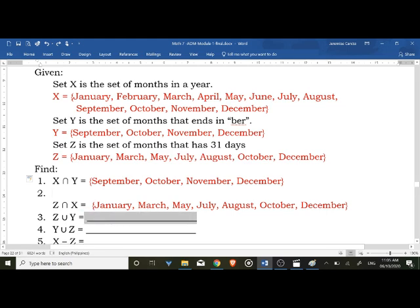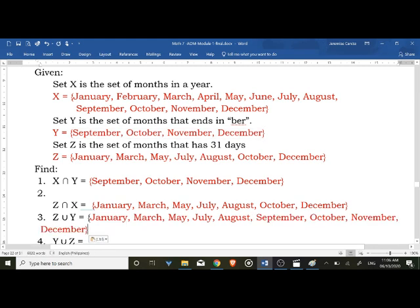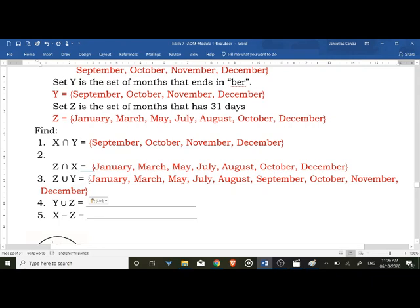Okay, number three: Union of Z and Y. So pag sinabing union, just combine the elements of Z and Y. So from January ito hanggang August, dagdag lang si Y. Yan, so yan na po ang union ni Z tsaka ni Y.